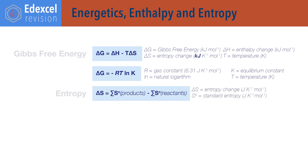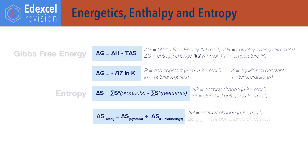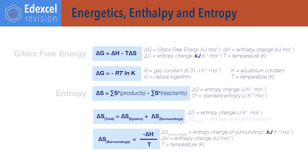Delta S, change in entropy, equals the sum of entropies of products minus the sum of entropies of reactants. Delta S total equals delta S system plus delta S surroundings. Delta S of surroundings equals minus delta H divided by T, where delta H is the enthalpy change of the reaction in kilojoules per mole, and T is temperature in kelvin. Note that in this equation, change in entropy must be given in kilojoules per kelvin per mole — divide delta S by 1000 to do this.